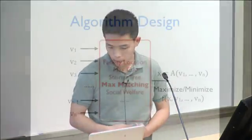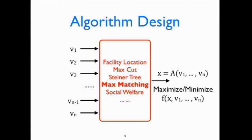There are various ways of looking at this problem. We can think of it as an algorithm design problem: we want to design a red box — an input-output interface. The input is the private valuations of the agents, and the output is some outcome from the feasible range, which in this example is the set of all possible bipartite matchings. The goal is to maximize the total weight of all edges in the matching. Any algorithm design problem — facility location, max cut, or others — can be interpreted in this framework.